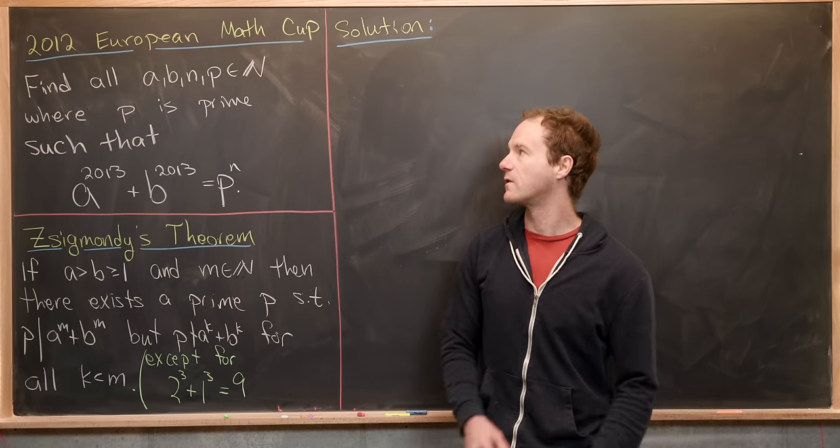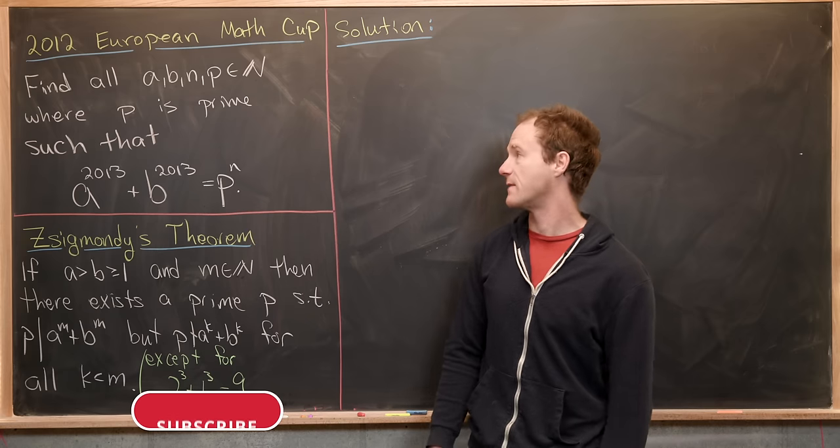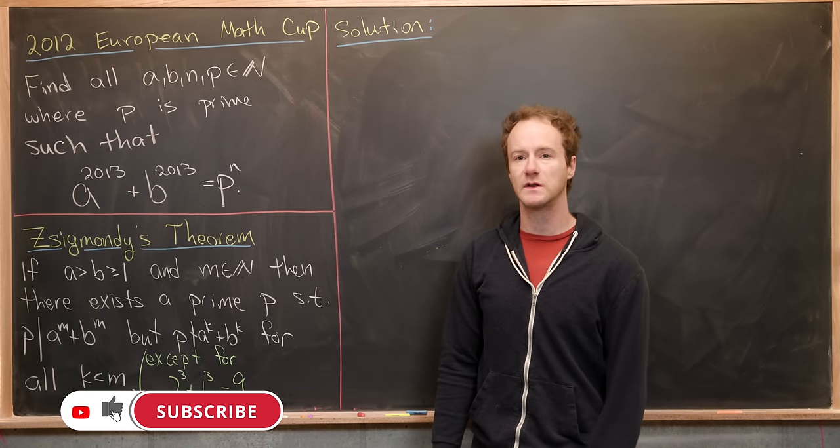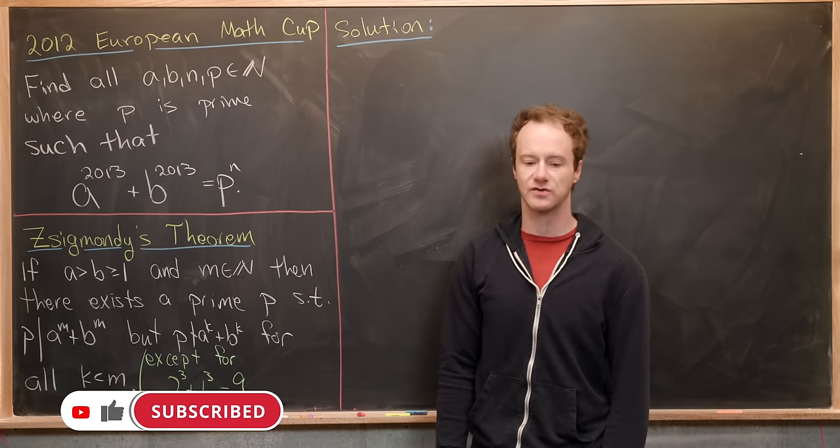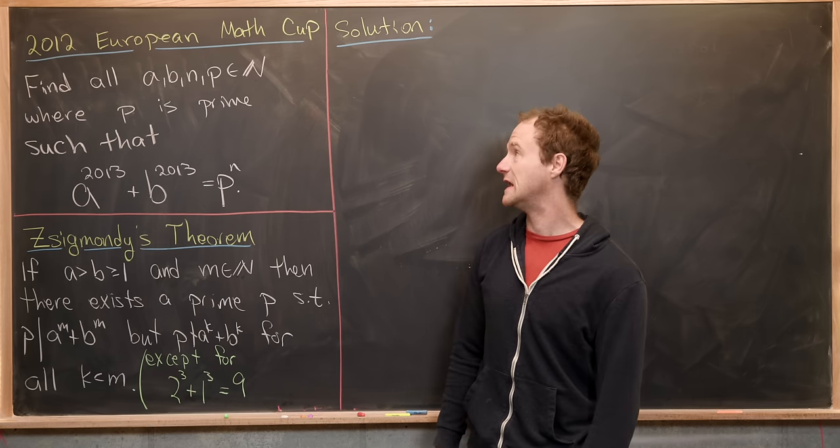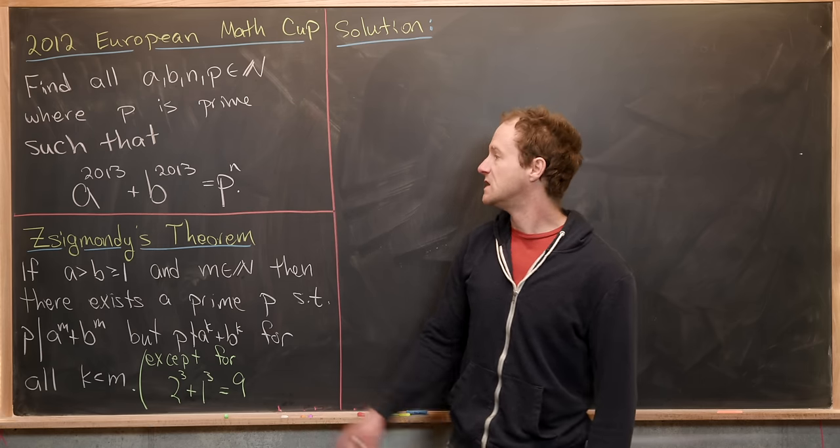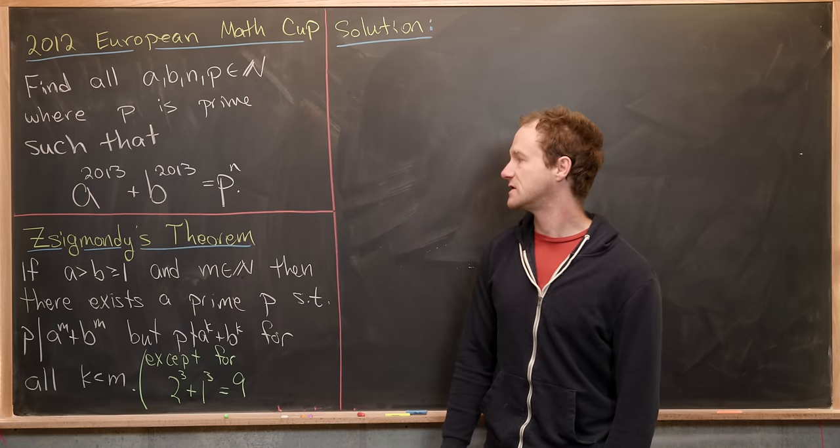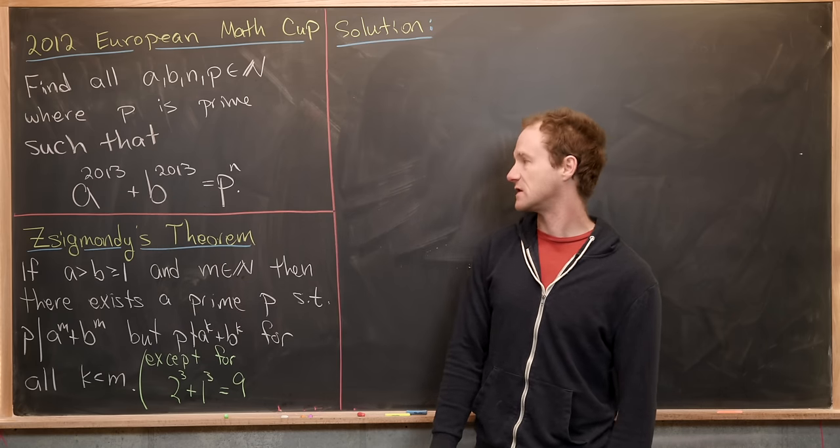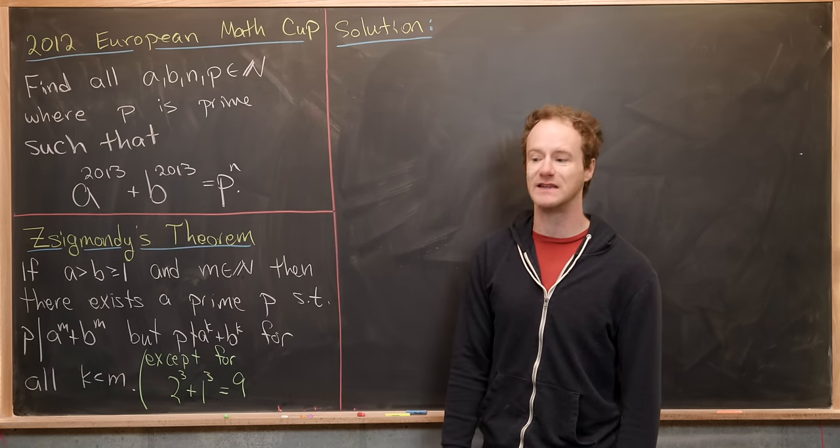Here we're going to look at a nice number theory problem from the 2012 European Mathematics Cup. So our goal is to find a quadruple of natural numbers A, B, N, and P, where P is prime, such that A to the 2013 plus B to the 2013 is equal to P to the N.